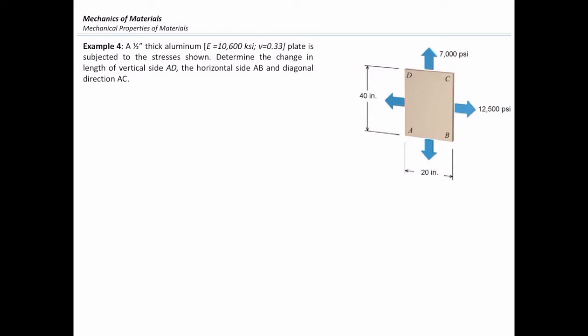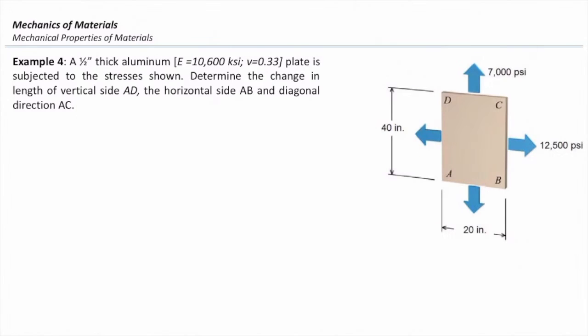A half-inch thick aluminum plate is subjected to the stresses shown. The aluminum material has 10,600 KSI modulus of elasticity and a Poisson ratio of 0.33. Determine the change in length of vertical side AD, the horizontal side AB, and diagonal direction AC.